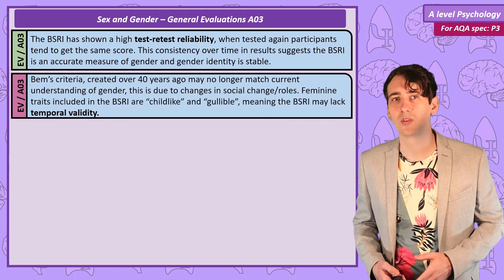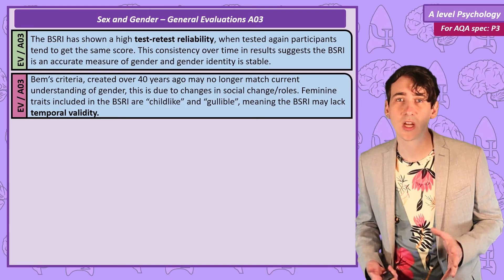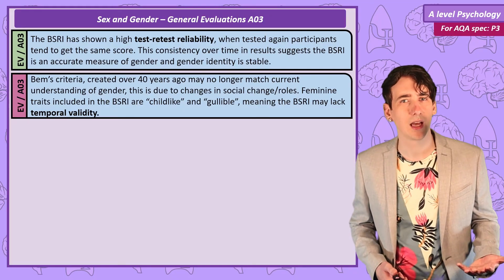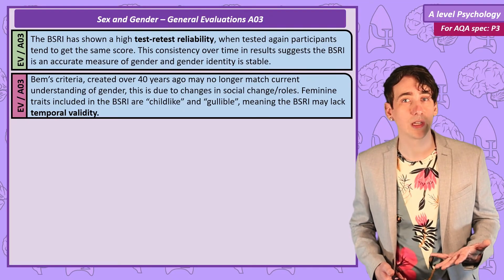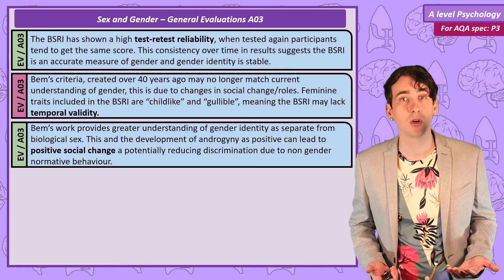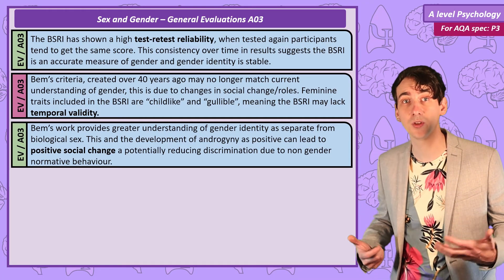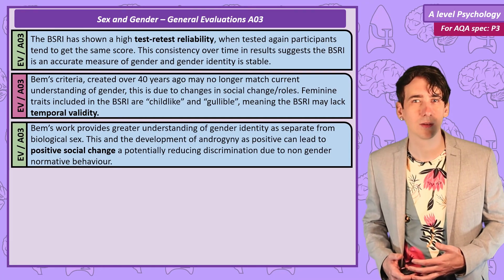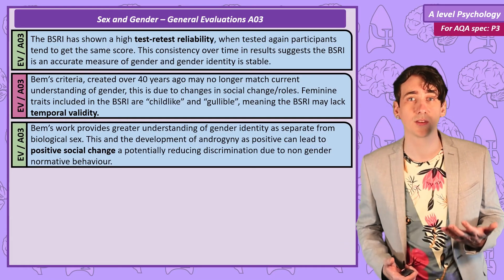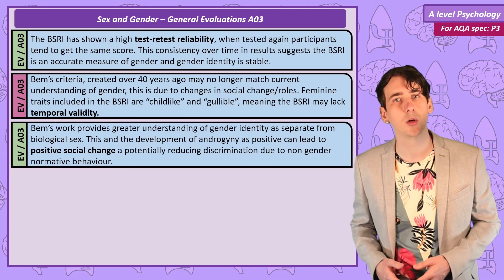But there is the issue of temporal validity. Looking at some of Bem's traits, we might not agree with some of them because of changes in society and our understanding of social roles. After all, childlike and gullible are two traits that Bem assigned to feminine. But a significant positive of Bem's work is it did help to establish that gender identity is separate from, and can be different to, biological sex. This, and positive promotion of androgyny, might have had positive effects on society, leading to less discrimination of people who lead non-gender normative lives.